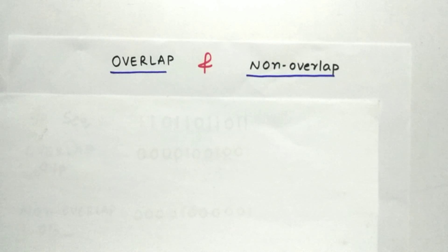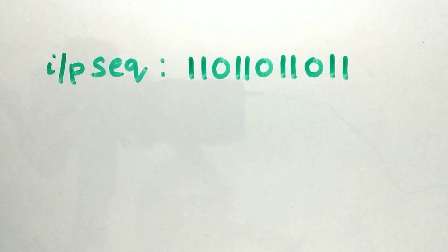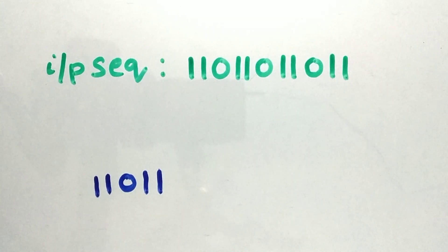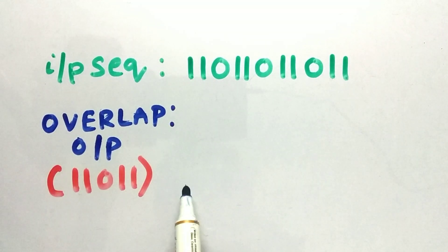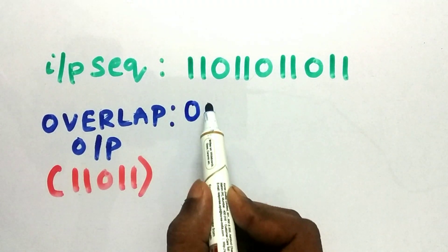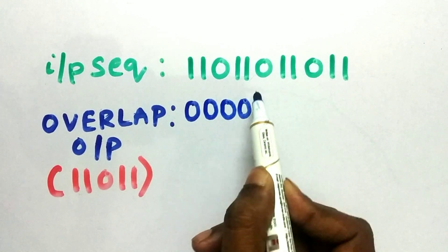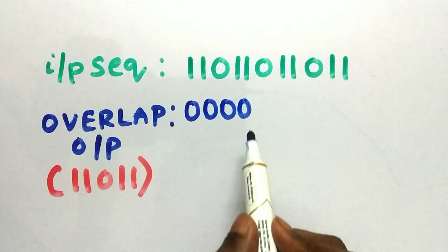To understand this better, let us take an example. This is the input sequence we are getting in our design, and from this input sequence we need to find the pattern 11011. Using the overlap case, when the first bit enters the output will be 0 since we have not yet got our pattern 11011. Similarly with the second, third, and fourth bits, but when the fifth bit enters we get our pattern 11011, so the output will be high.